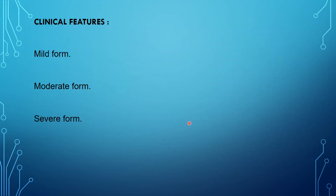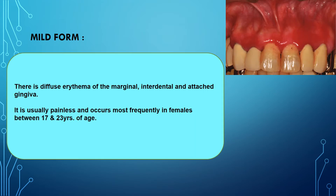The clinical features can be classified into mild, moderate, and severe forms. In the mild form, it appears as diffuse erythema of the marginal, interdental, and attached gingiva. It is usually painless and occurs most frequently in females between 17 and 23 years of age.